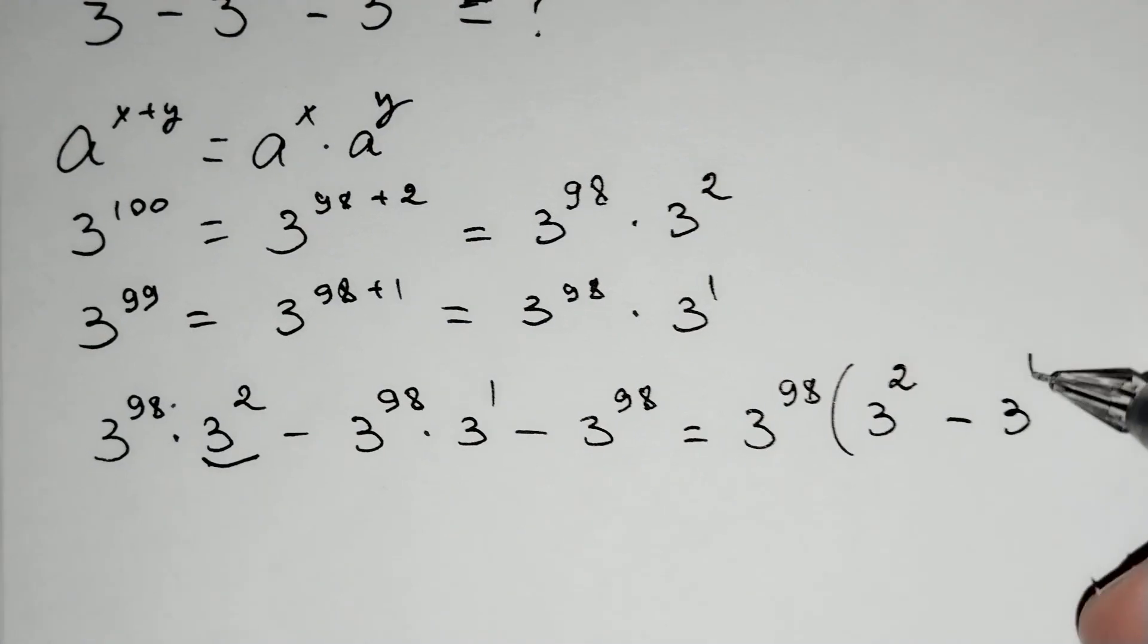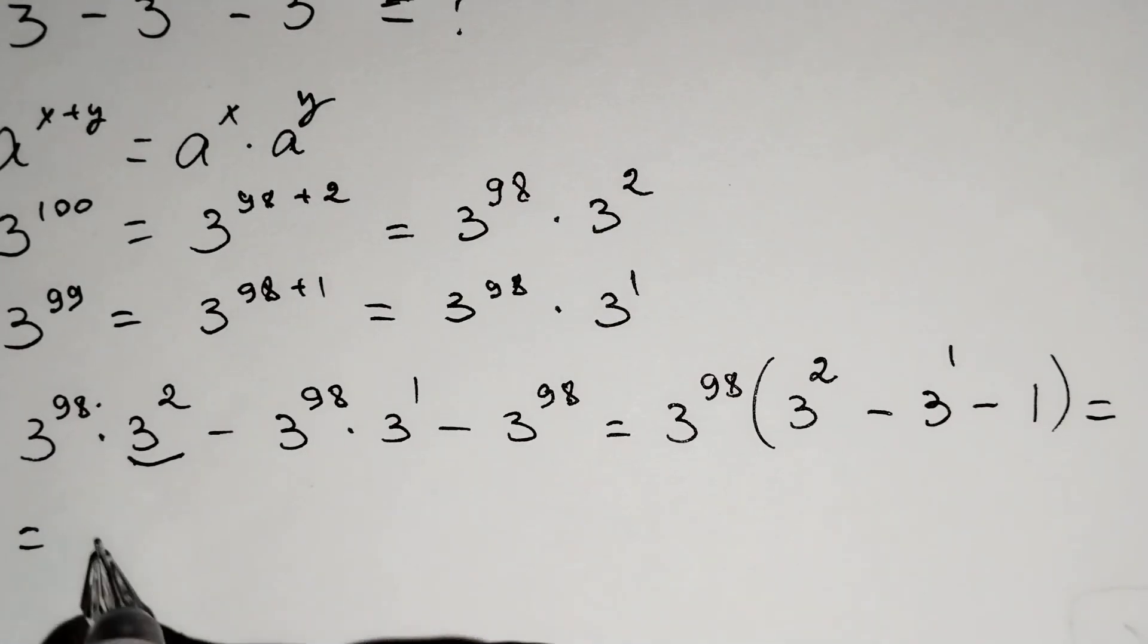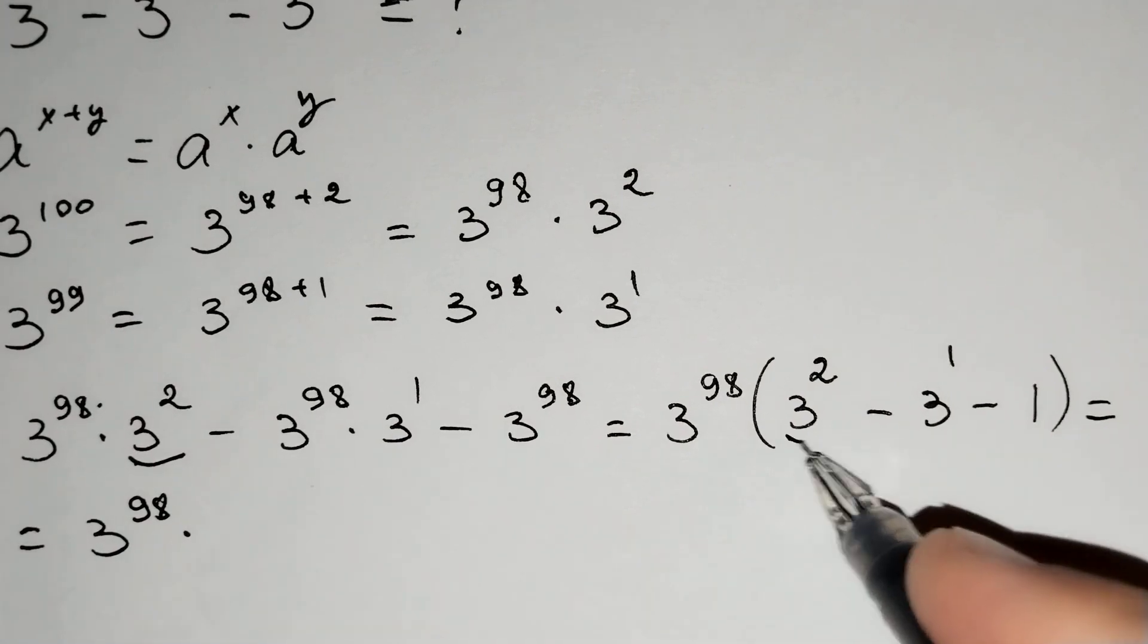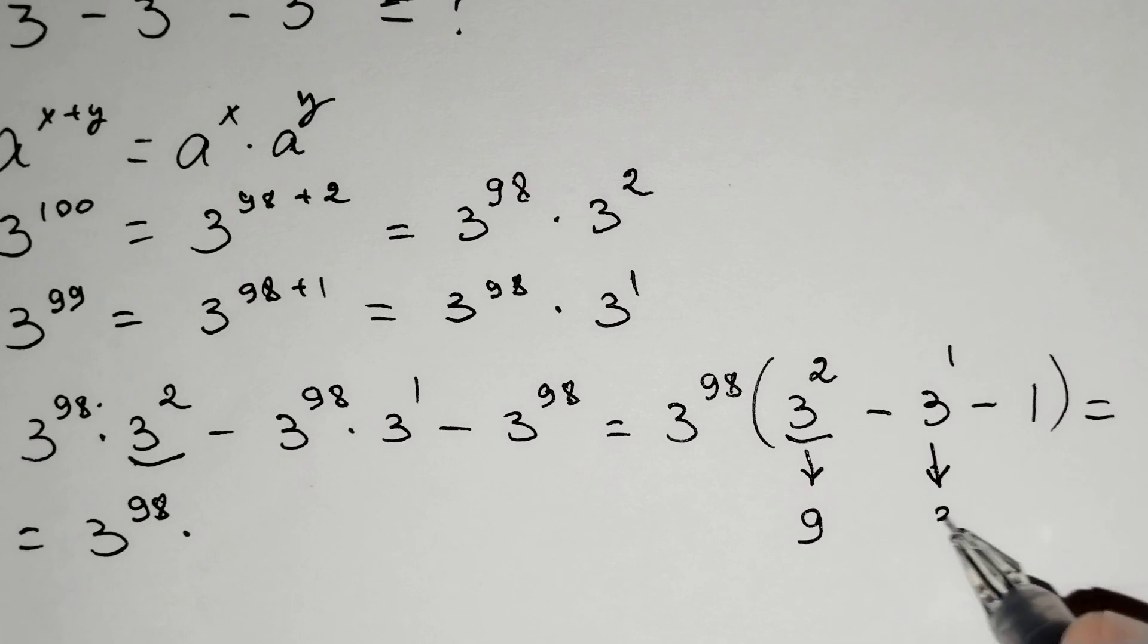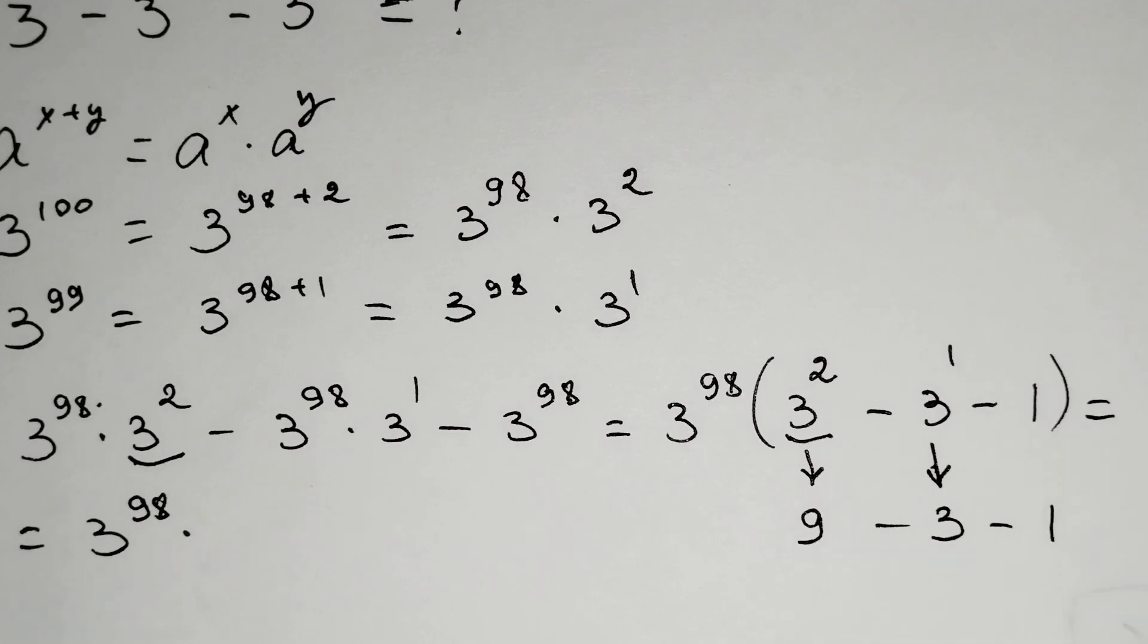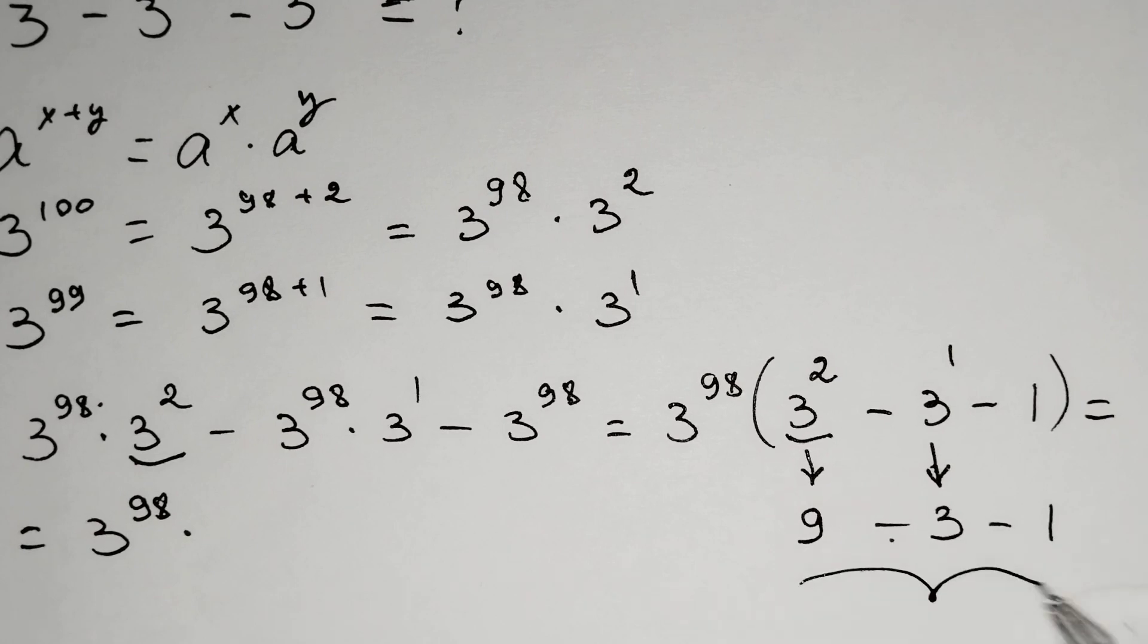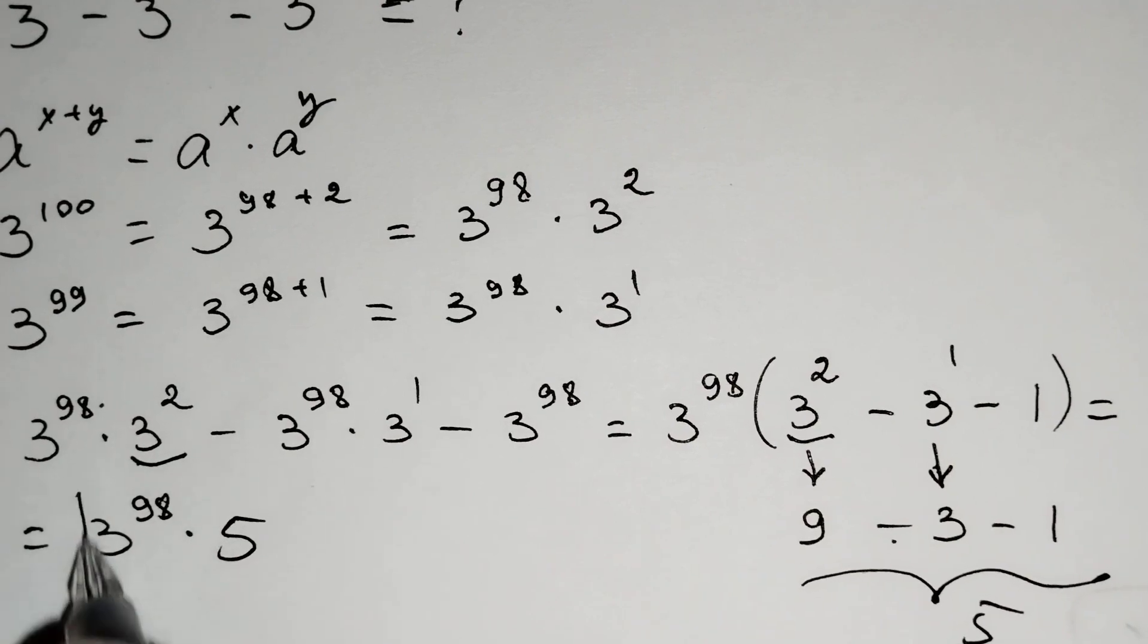This equals 3^98 times: 3^2 equals 9, 3^1 equals 3, and 1. So 9 - 3 - 1 = 9 - 4 = 5. And 3^98 * 5 is our answer.